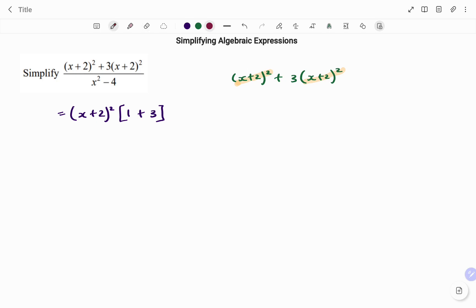So if I have 1 and 3 left and I factorize, I'm taking out (x plus 2) squared. I'm left with 1 plus 3, which is what I have here.